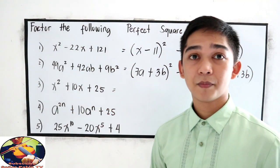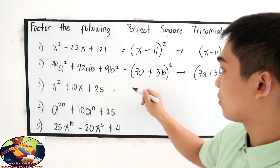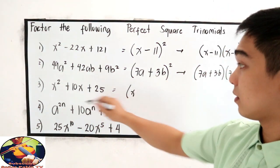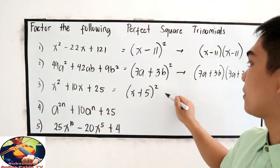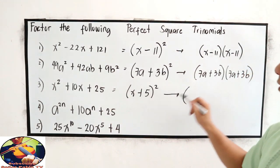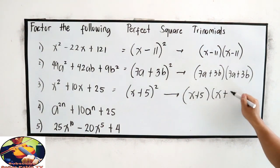Number 3, x squared plus 10x plus 25. So we have x plus the square root of 25, that is 5 squared, and it can be written as x plus 5 times x plus 5.